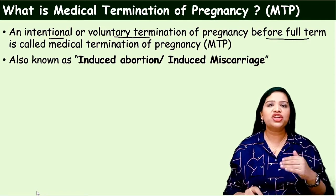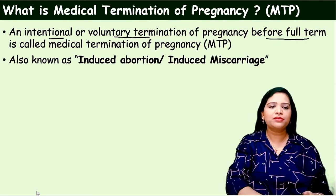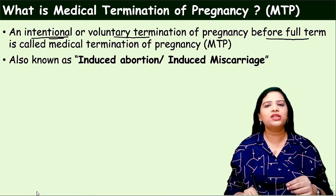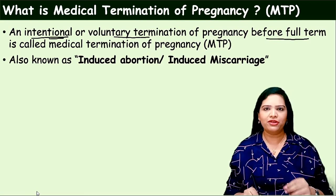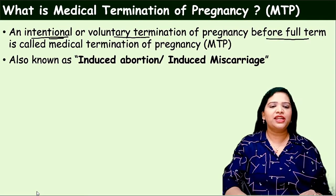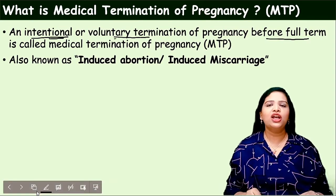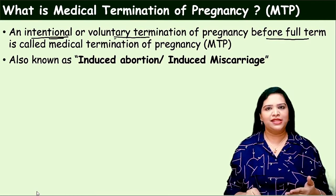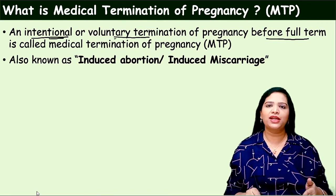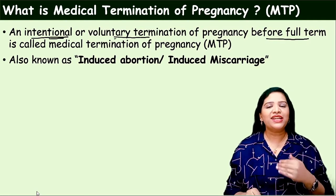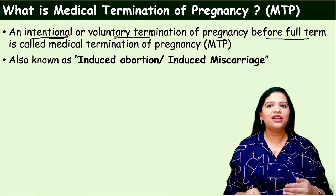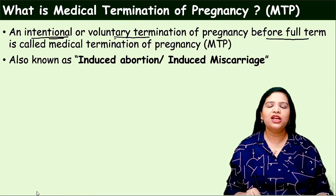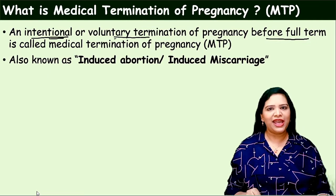This abortion is done intentionally — intentionally means for a cause. The cause must be a noble cause. It is done intentionally and also voluntarily, so nobody is compelling and the woman takes the decision. She accepts for that abortion. So it is an intentional and voluntary termination of the pregnancy before the full term. That is called MTP.